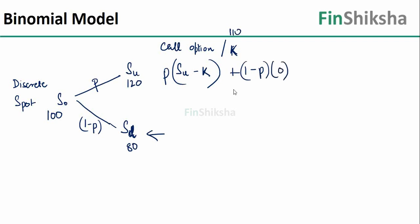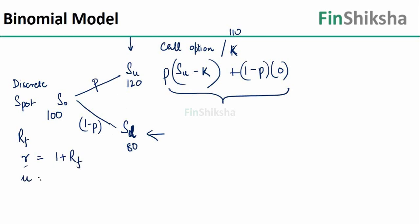At the lower level the payoff for the call would be 0 — so (1 minus p) into 0. That's my call value at the end of the first year. If I find the present value of this entire term, I should be able to derive the value of the call option today. Now I'm going to introduce the risk-free rate RF, where R is nothing but 1 plus RF. I'll also define a parameter u which is Su / S₀ — in our example 1.2 — and a parameter d which is Sd / S₀.